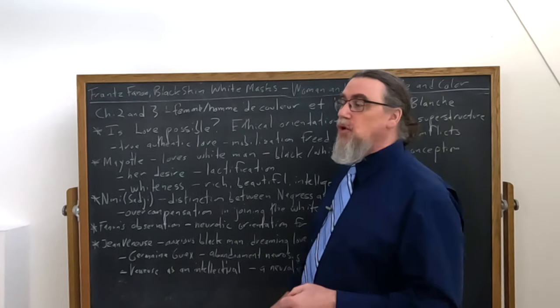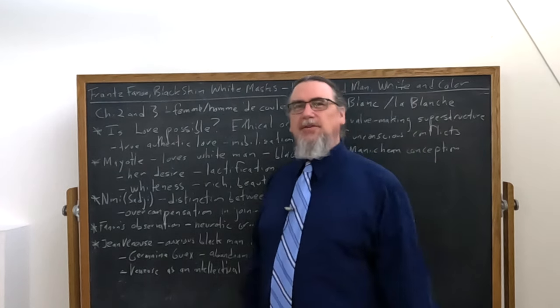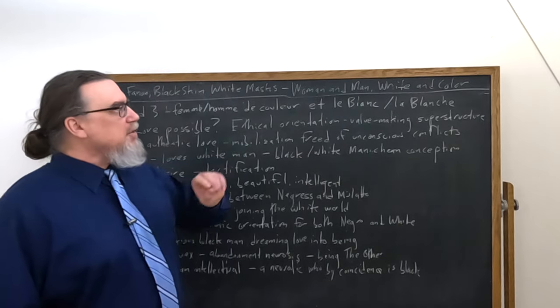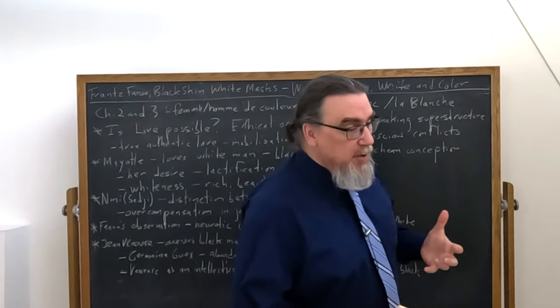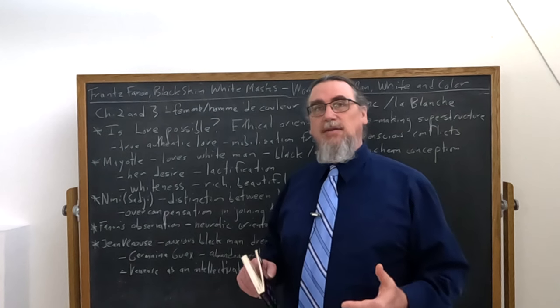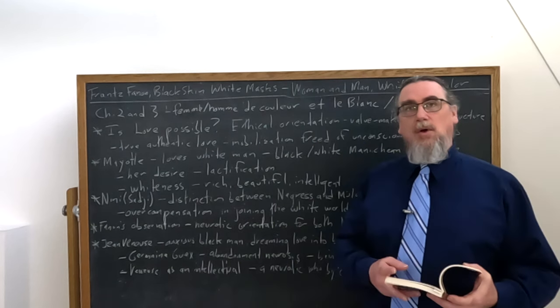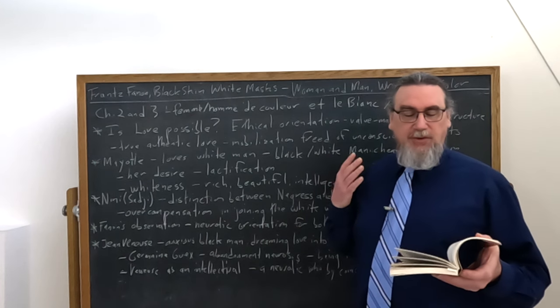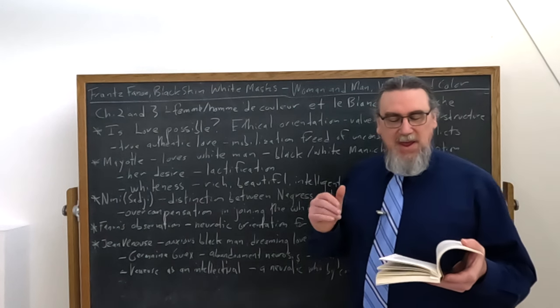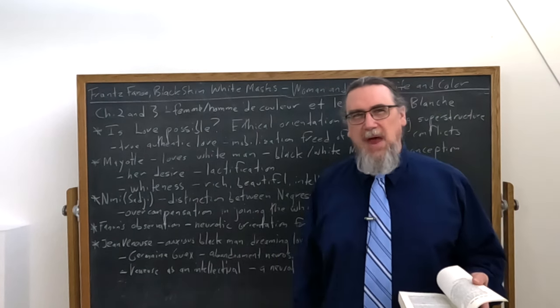So, within most of us, both of these themes have some play. And he says, the person I love, for an example, will strengthen me by endorsing my assumption of my manhood, while the need to earn the admiration of the love of others will erect a value-making superstructure on my whole vision of the world. So, while people do try to withdraw, to isolate themselves, or just to control other people, these are ultimately unsuccessful strategies.